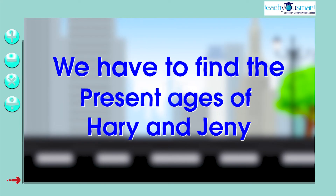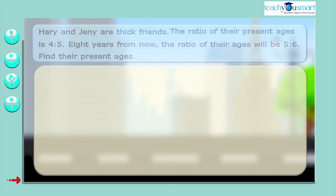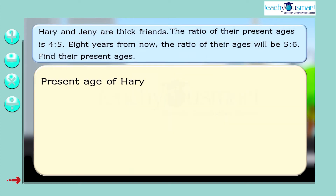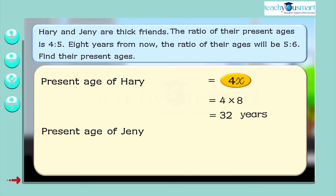We have to find the present age of Harry and Jenny. The present age of Harry is 4x equals 4 multiplied by 8, which equals 32 years. The present age of Jenny is 5x equals 5 multiplied by 8, which equals 40 years.